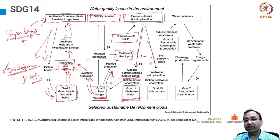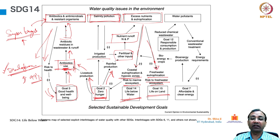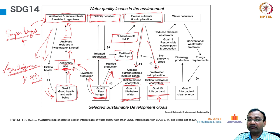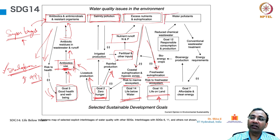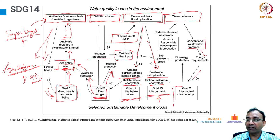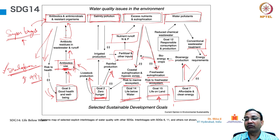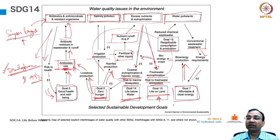The other repercussion — fresh water eutrophication, risk to freshwater ecosystem and life on land. This can happen in water bodies on the land surface also — rivers, lakes, and underground aquifers. The life forms living on land will also get directly impacted. From water pollutants, the conventional wastewater treatments have energy requirements, directly related to affordable clean energy. Bioenergy production from bioenergy crops leads back to agriculture. Responsible consumption and reduced chemical wastewater are directly connected to water pollution and so on.